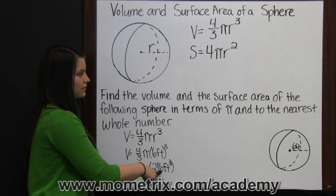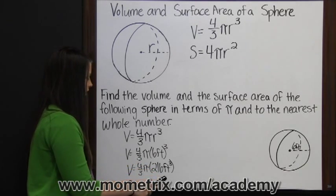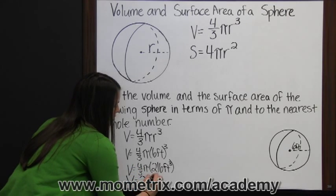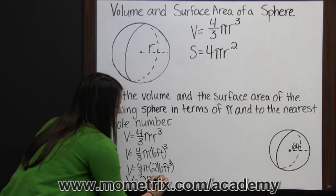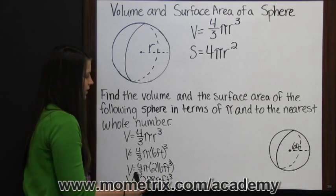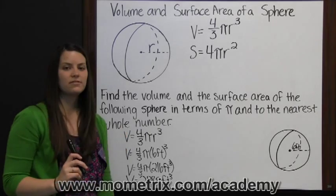Four-thirds of 216 is 288, so the volume is 288 pi feet cubed. That's our answer in terms of pi.